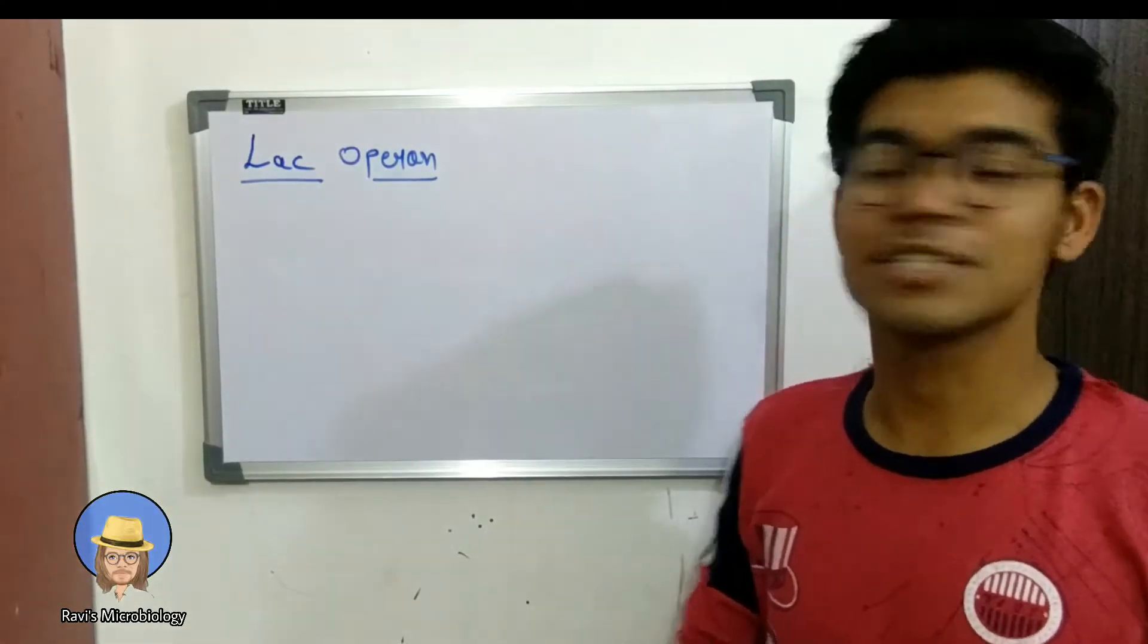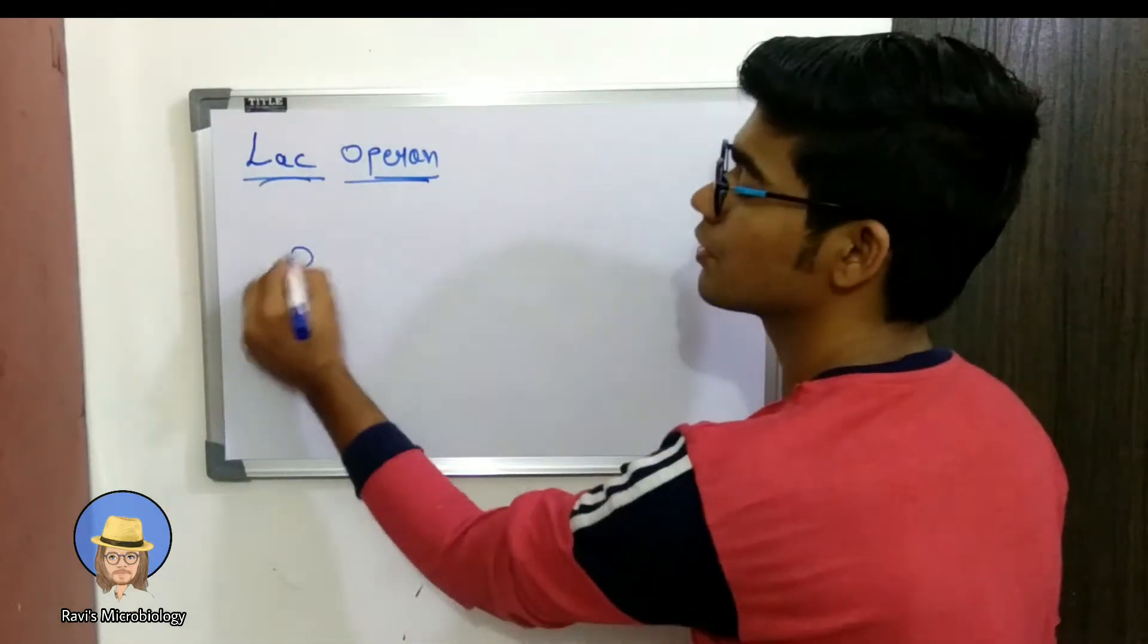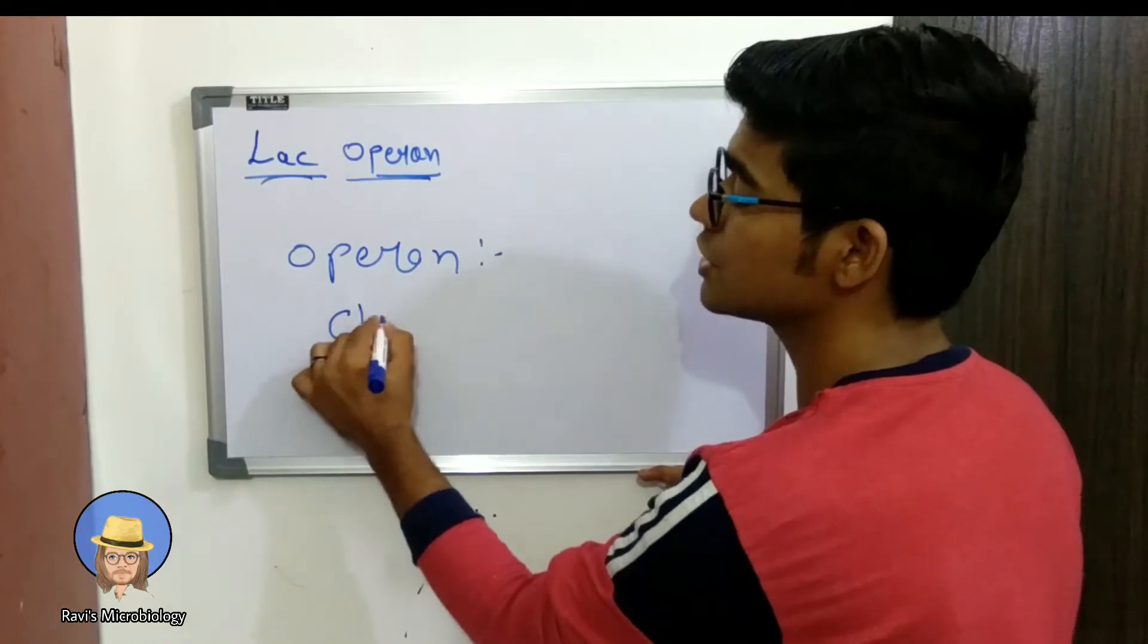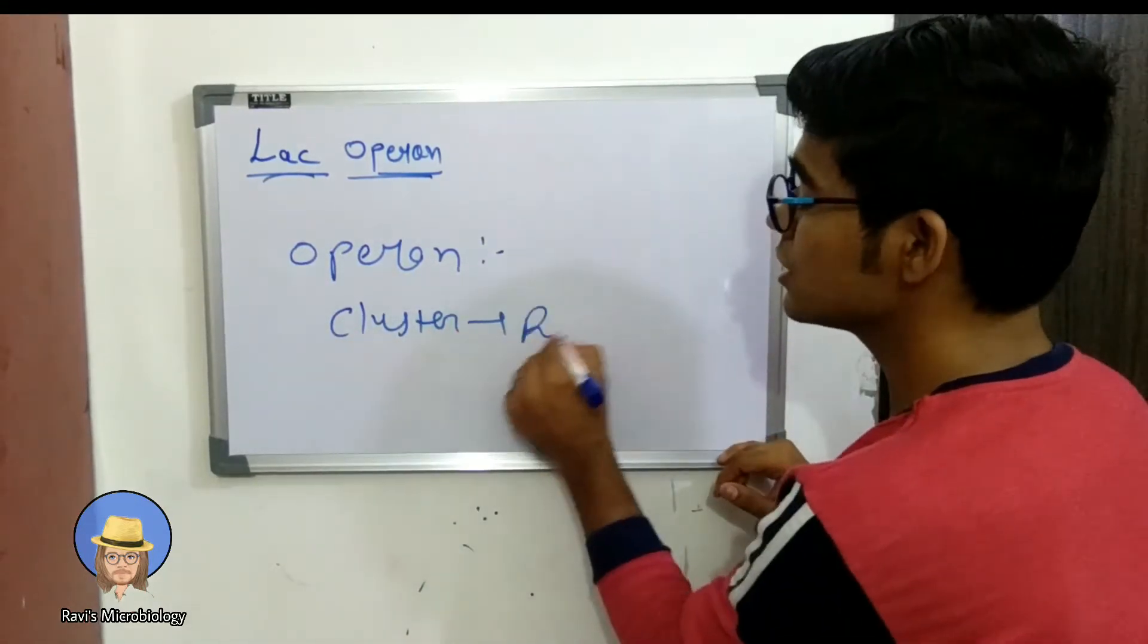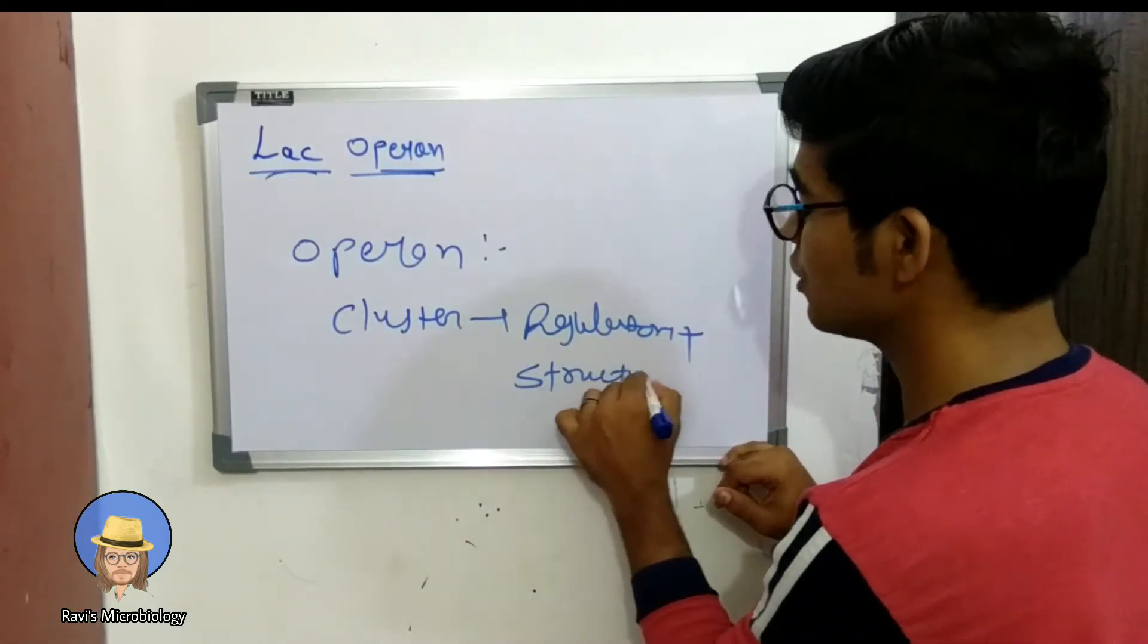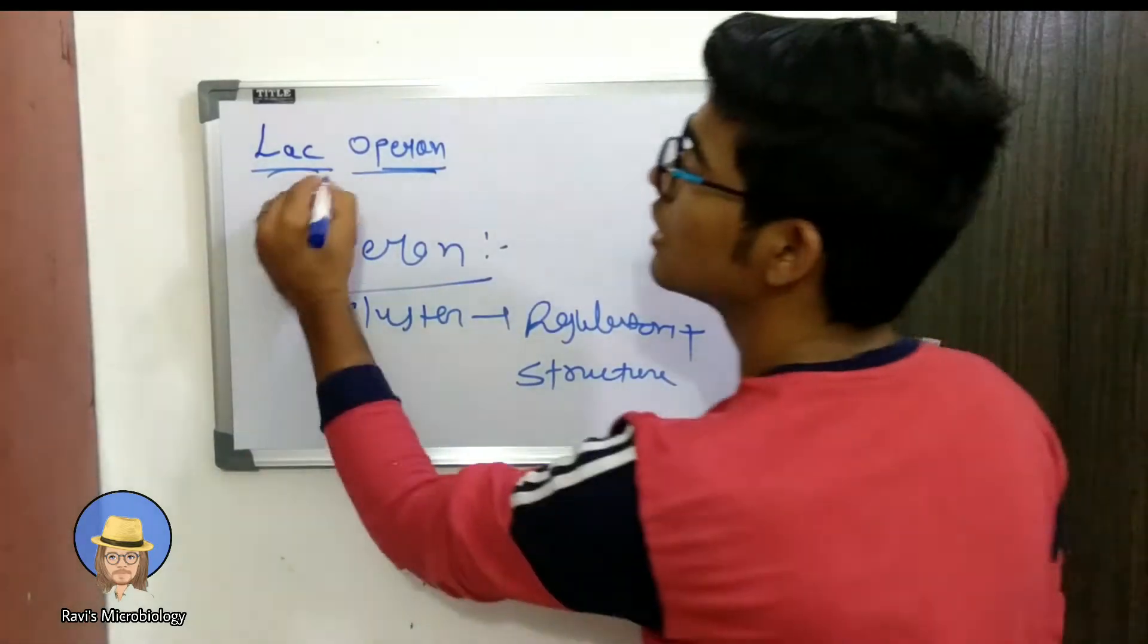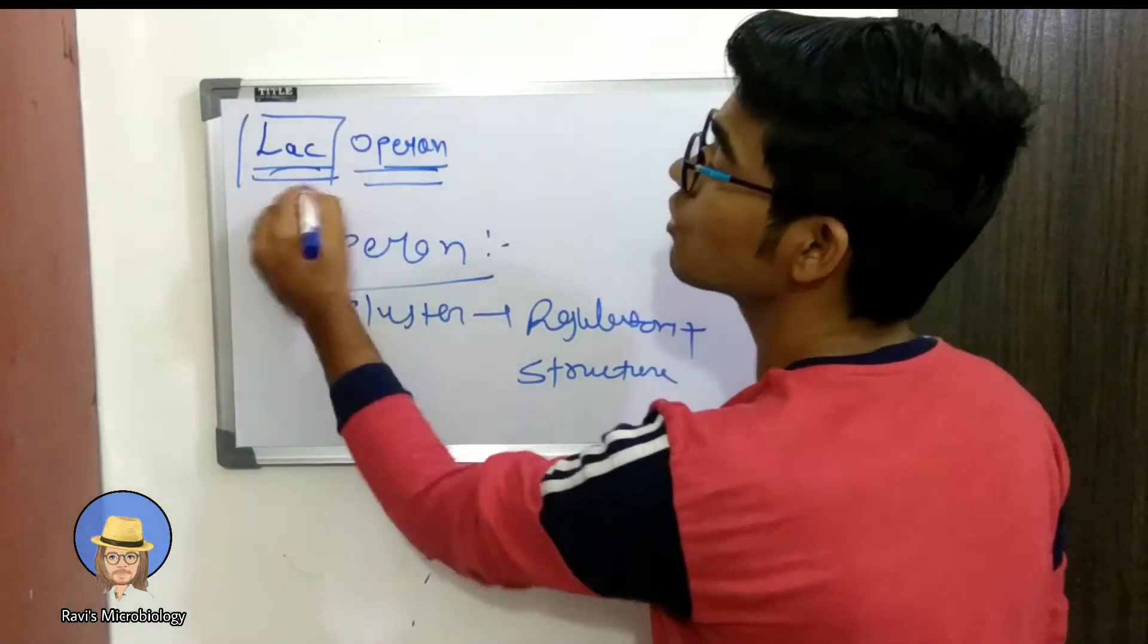Hello friends, today we study lactose operon. So first of all, what is operon? It is a cluster of genes which contain regulatory genes and structural genes. It is called operon. The operon is well studied in lactose metabolism in prokaryotic organisms, so we study lactose operon.